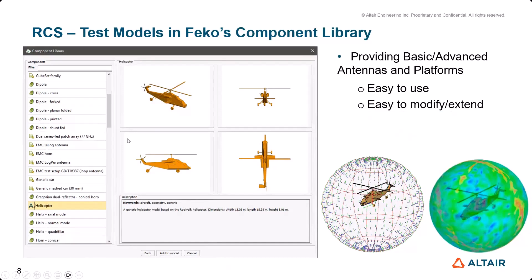The RCS test models can be found in FEKO's component library. The component library provides basic and advanced antennas and platforms. These are easy to use and you can easily modify and extend them for further antenna and RCS simulation.